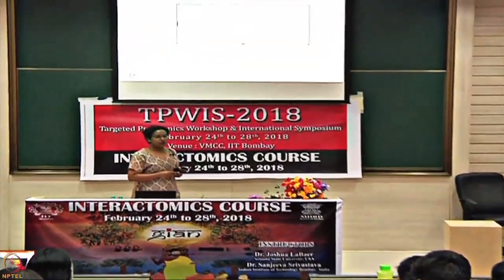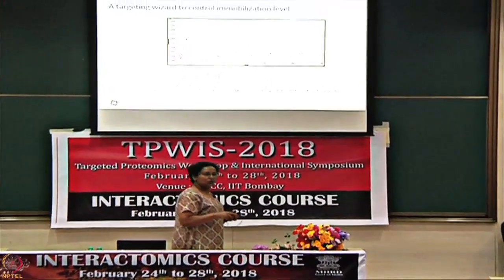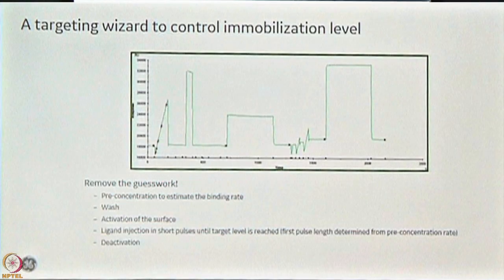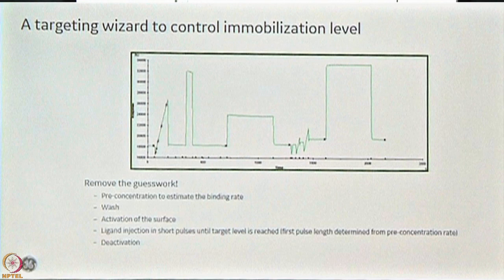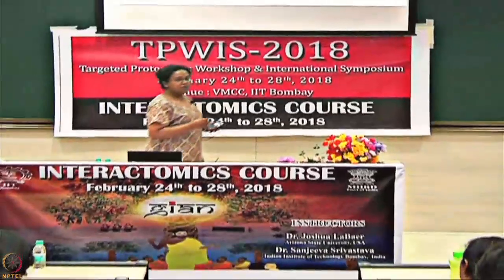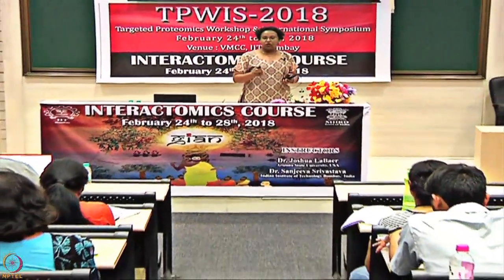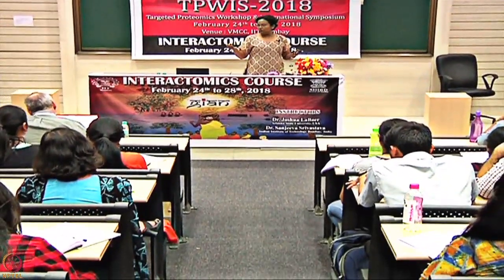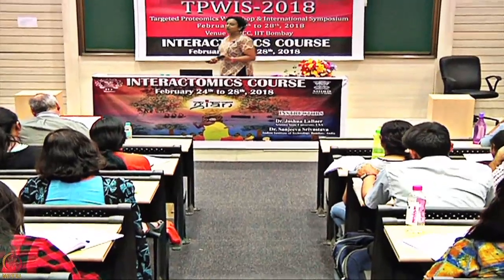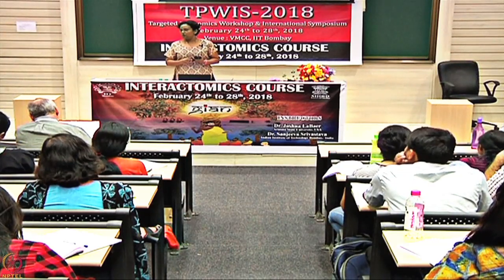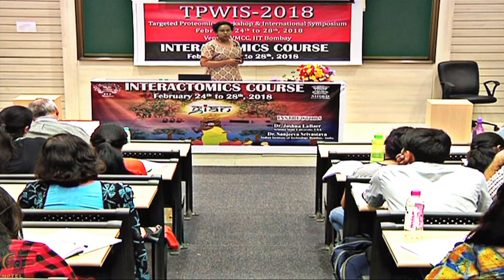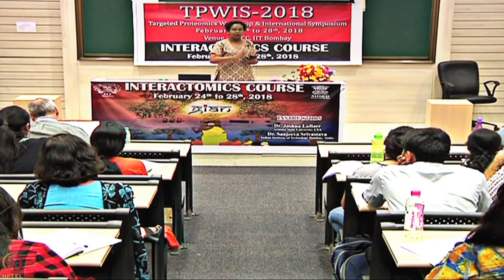When you are directly immobilizing your ligand it is covalently linked, and once you immobilize it, it's immobilized for good — you cannot use the chip to immobilize anything else. You use the same ligand to do your experiments. But there is a smart way to actually use your chips more judiciously. When you are immobilizing and playing with the RUs — how much to immobilize — you may not know exactly how much you'd like to immobilize.